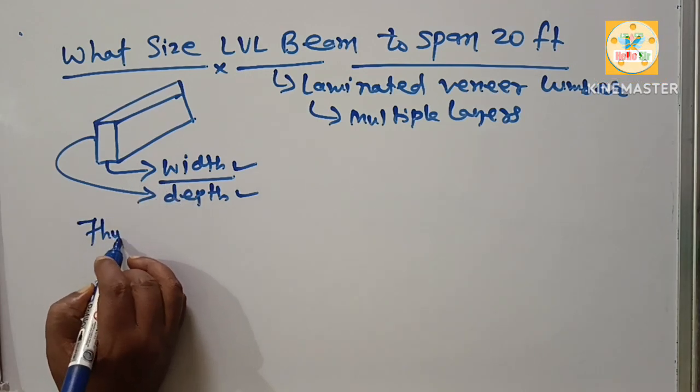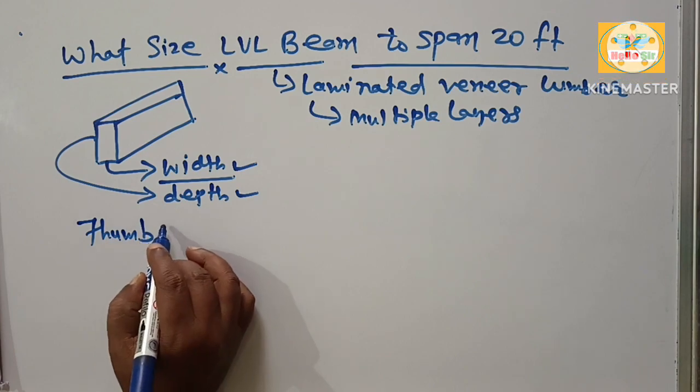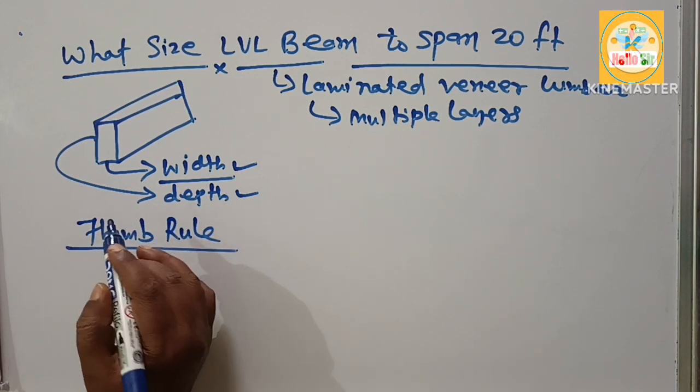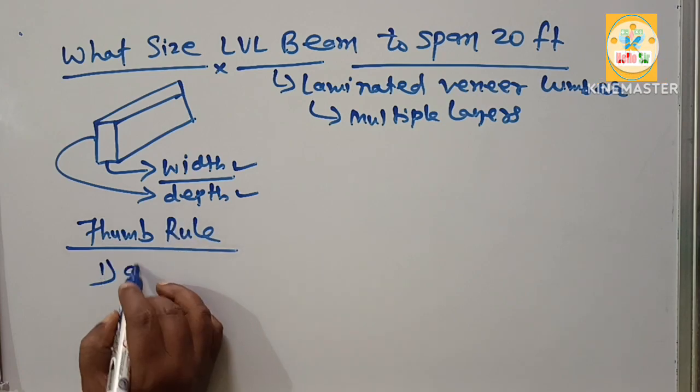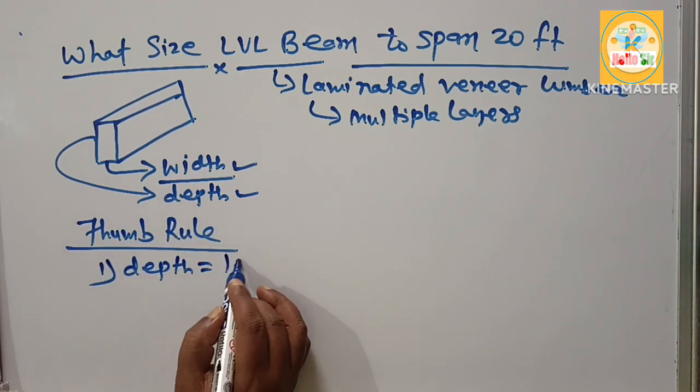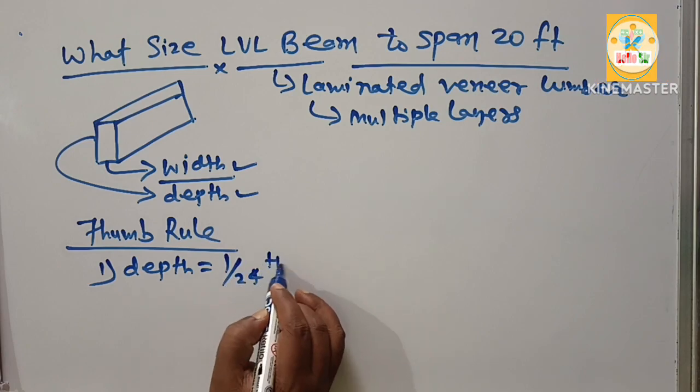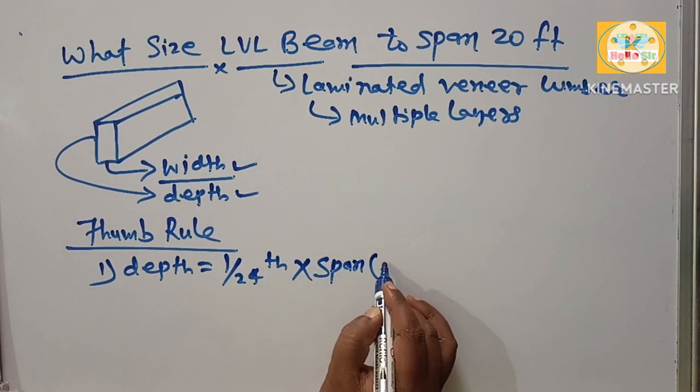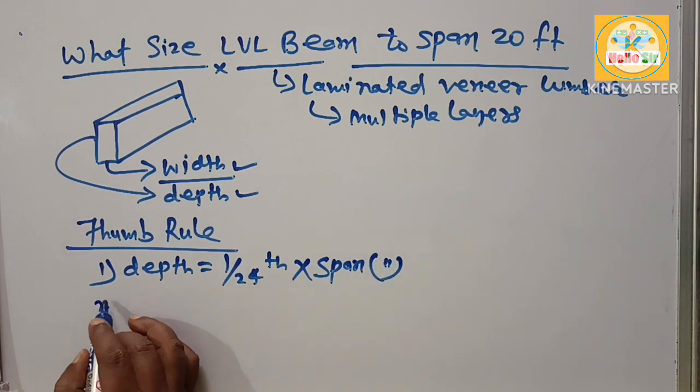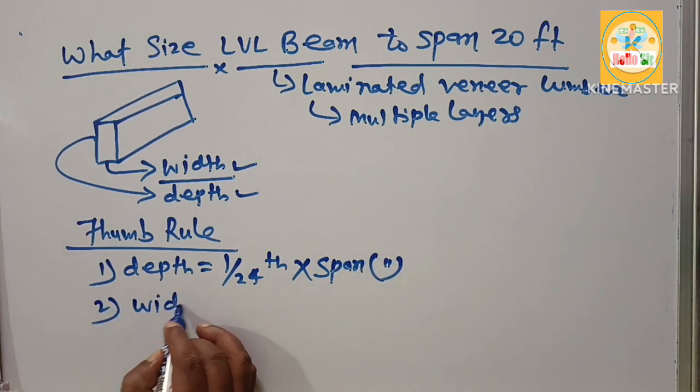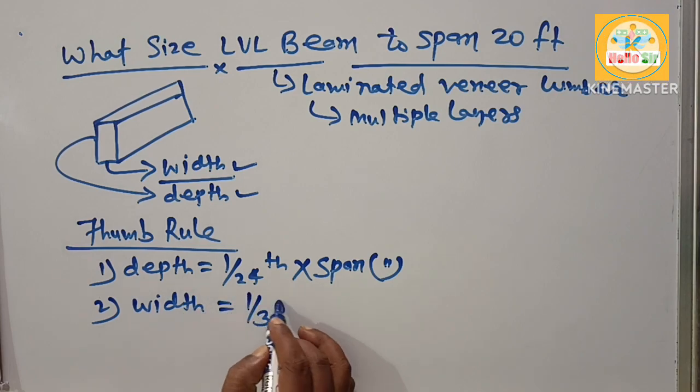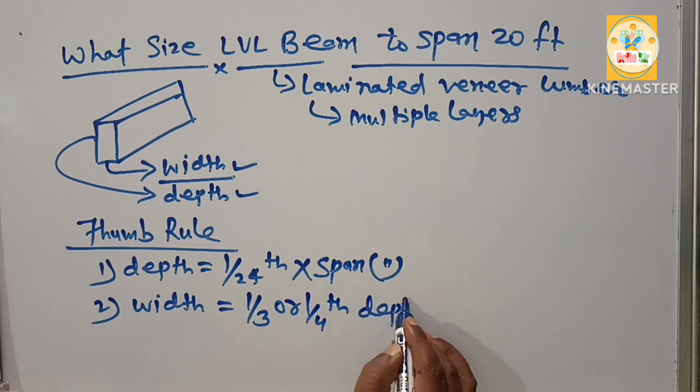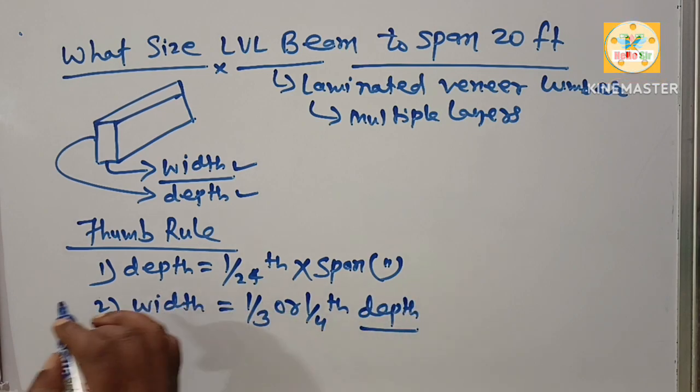There is a thumb rule. You have to find out according to their thumb rule what are the thumb rule for sizing of LVL beam. The depth needs to be 1/24th of a span length in inches, and their width should be 1/3 or 1/4th of depth of the LVL beam.